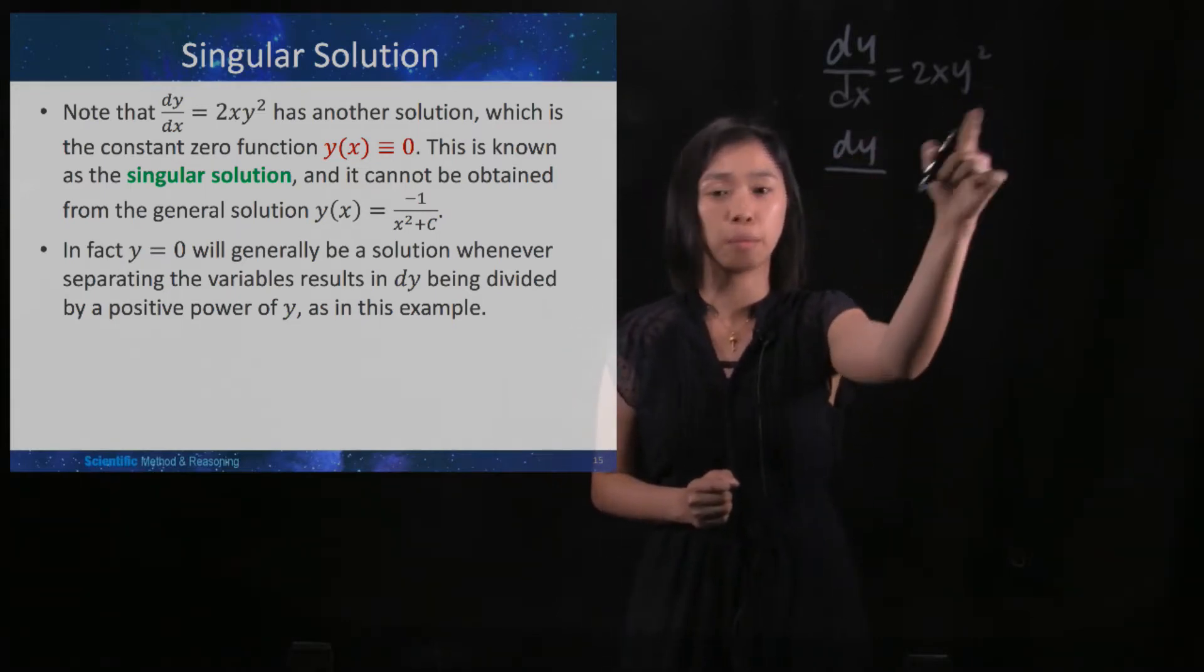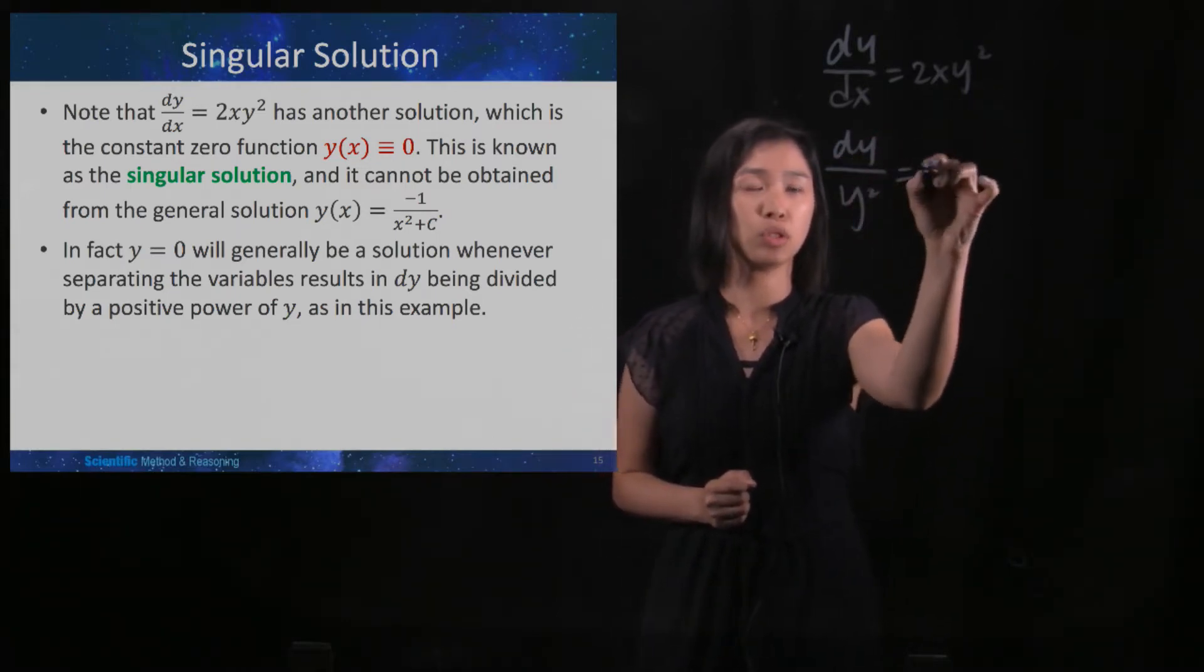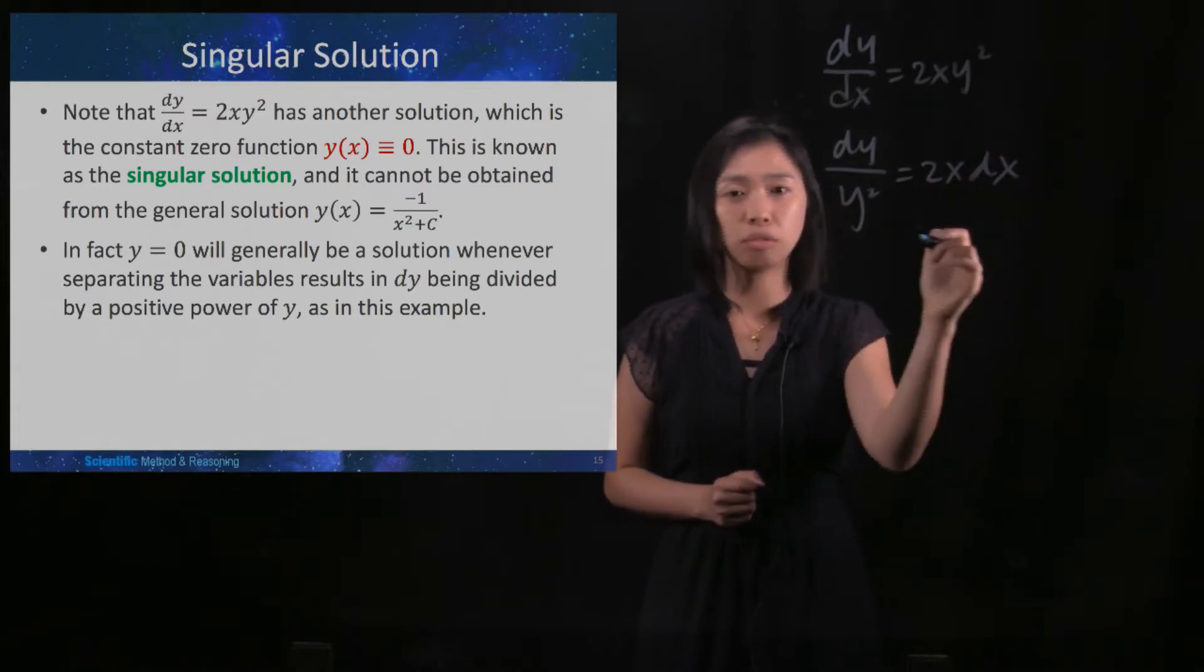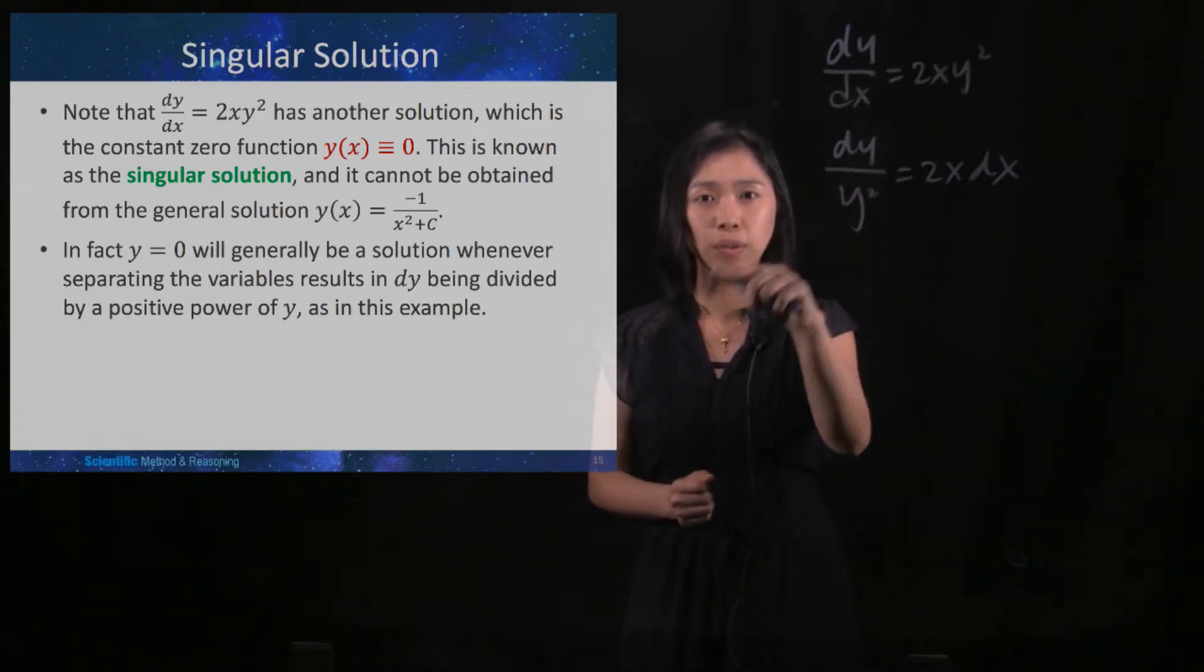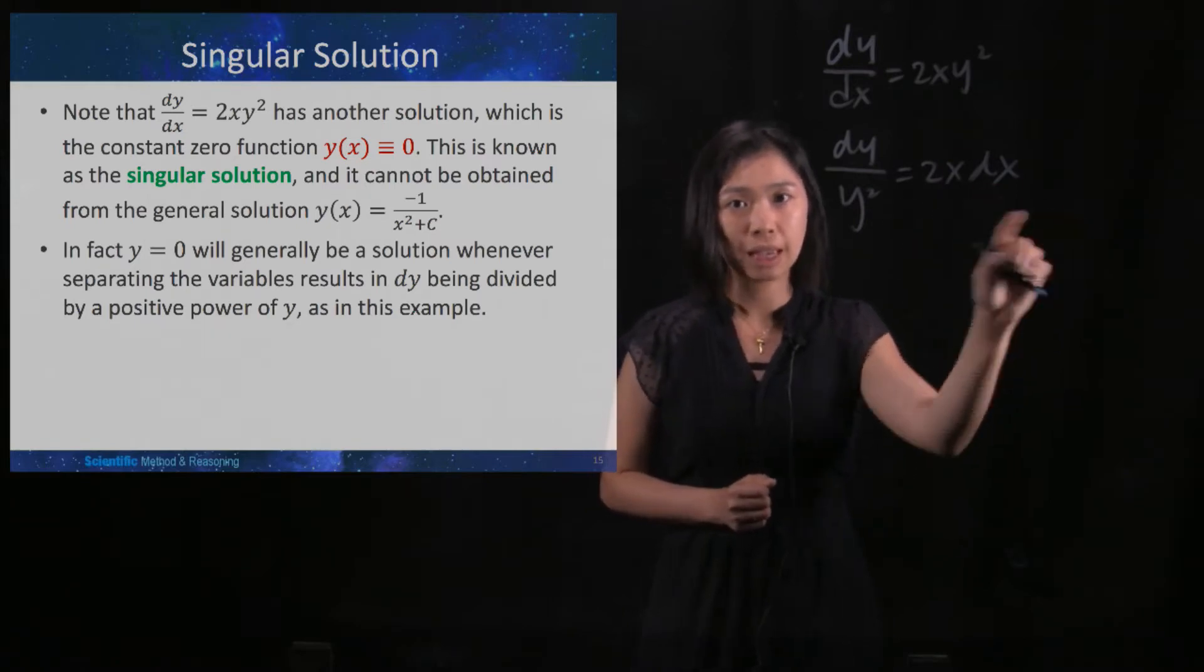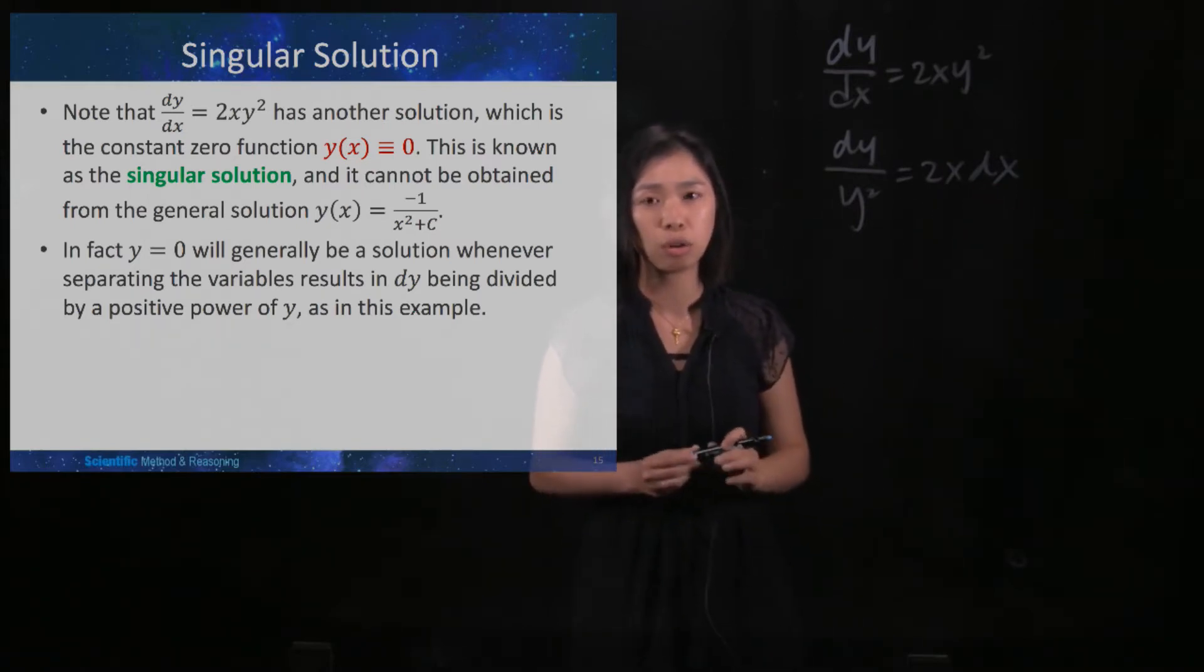So dy over y squared equals 2x dx. Right now, you have the variable y on one side of the equation and the variable x on the other side of the differential equation.